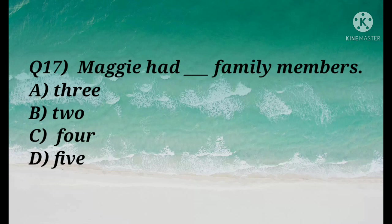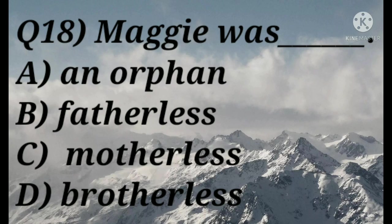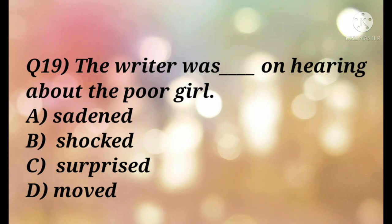Question 16: Maggie's family had — 3, 2, 4, or 5 members? Maggie, her mother, and her brother — so the total is three. The answer is three. Question 18: Maggie was — an orphan, fatherless, motherless, or brotherless? The correct answer is fatherless. Question 19: The writer was — saddened, shocked, surprised, or moved — on hearing about the poor girl? All options seem plausible, but the actual vocabulary used is 'moved.' The writer was moved.